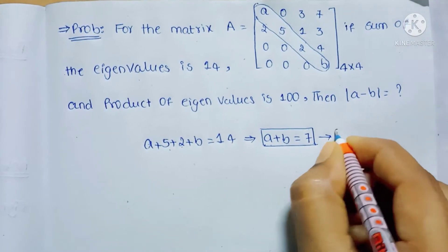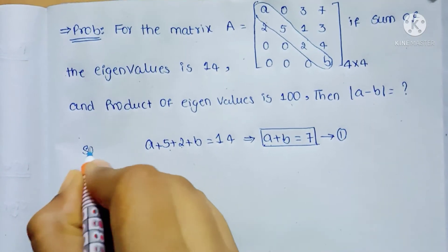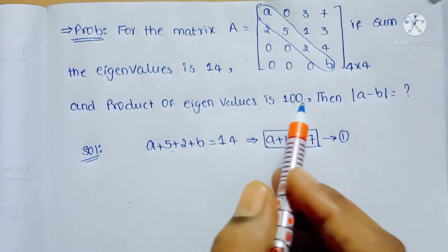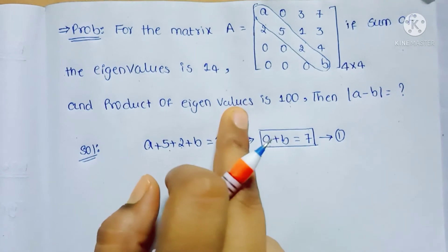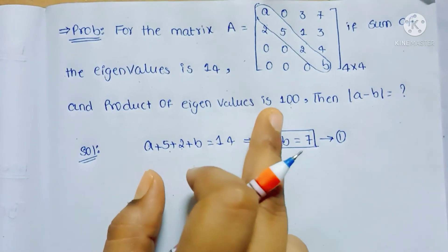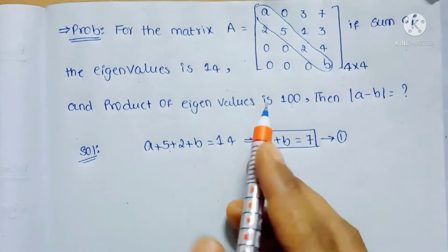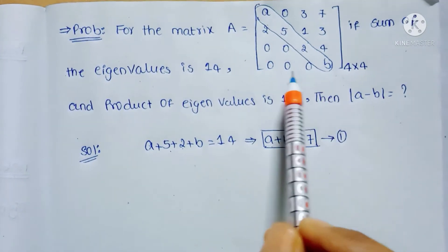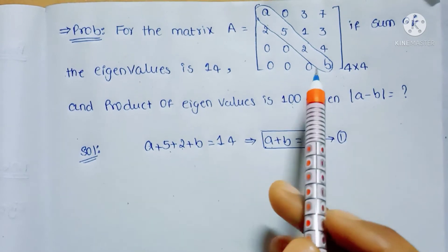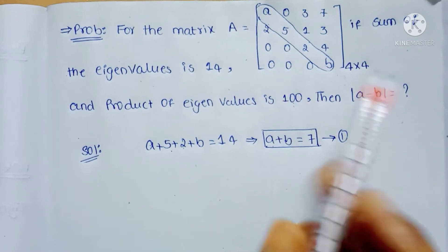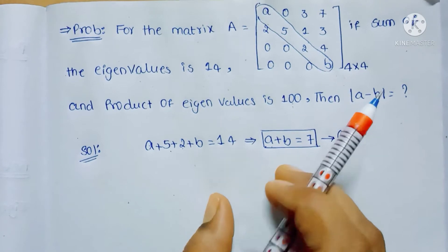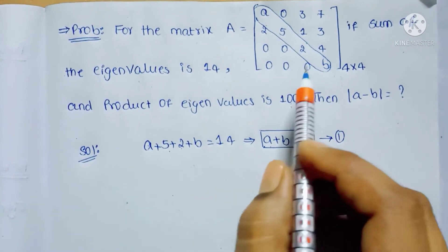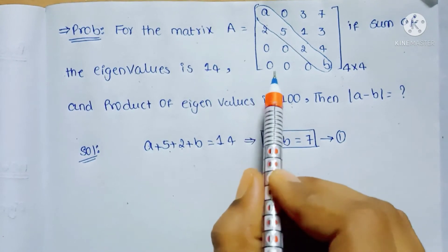Moving to the next point — they are given that the product of the eigenvalues is 100, and we know that the product of the eigenvalues is equal to the determinant of that matrix. This is a 4 by 4 matrix, so there are many calculations involved. In competitive exams we have very less time, so to save time we choose the row with the most zeros.